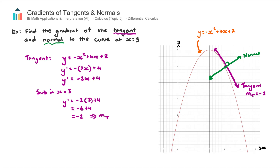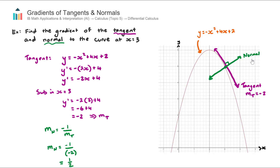Now that we have the tangent gradient, let's find the gradient of the normal. The relationship between the gradients of perpendicular lines is that the gradient of the normal equals the negative reciprocal of the gradient of the tangent — that is, negative 1 divided by the gradient of the tangent. Our gradient of the tangent is negative 2, so the gradient of the normal is negative 1 over negative 2. A negative number divided by a negative number gives us positive one half. So mn equals one half.